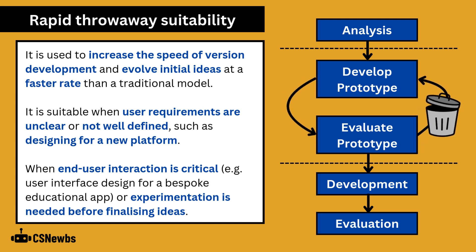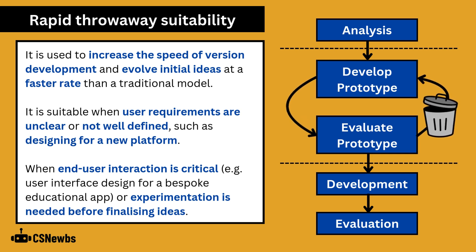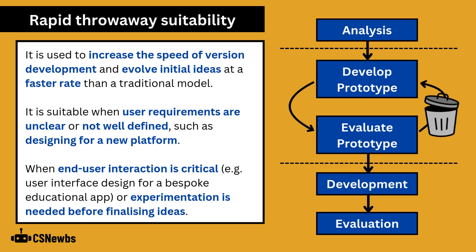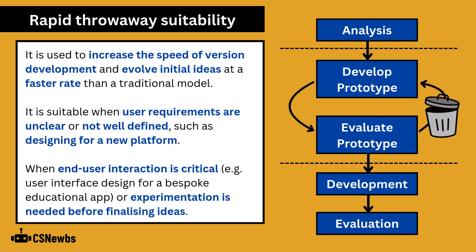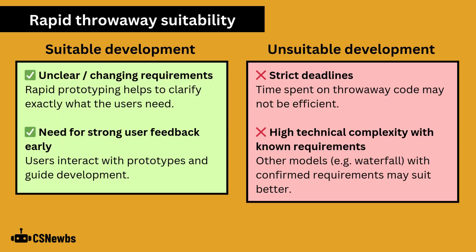This model is used to increase the speed of version development and evolve initial ideas at a faster rate than a traditional model. It's also suitable when user requirements are unclear or not well defined, such as designing for a new platform like a video game system that hasn't been released yet. It's also suitable when end user interaction is critical, for example user interface design for a bespoke educational app, or if experimentation is needed before finalizing ideas. The rapid throwaway prototype model is suitable if there are unclear or changing requirements, or there's a need for strong user feedback early on in development.